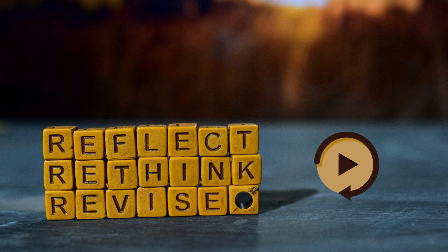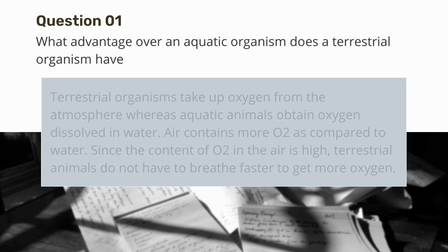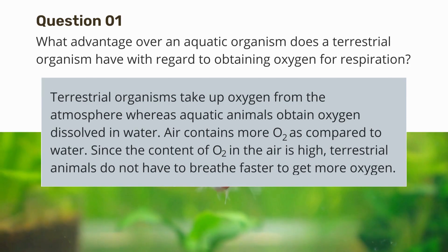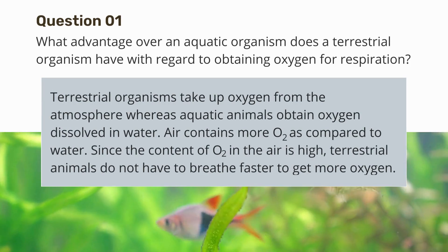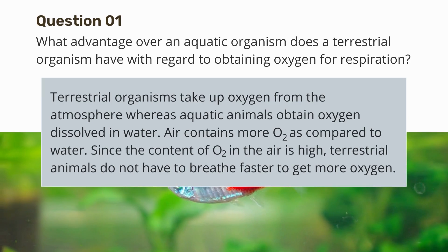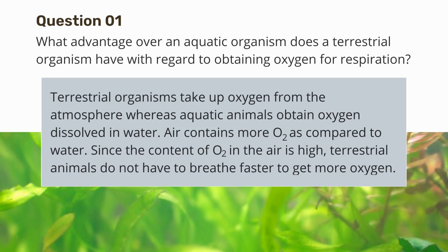Let's do a quick recap. Question one: what advantage does a terrestrial organism have over an aquatic organism with regard to obtaining oxygen for respiration? Terrestrial organisms take up oxygen from the atmosphere, while aquatic animals obtain oxygen dissolved in water. Air contains more oxygen compared to water, so terrestrial animals do not have to breathe faster to get more oxygen.